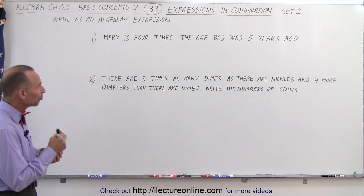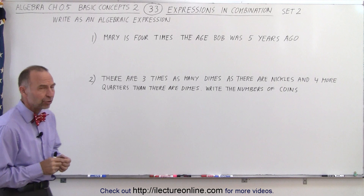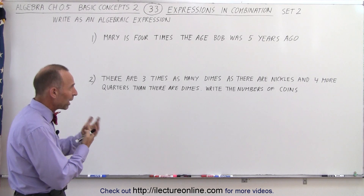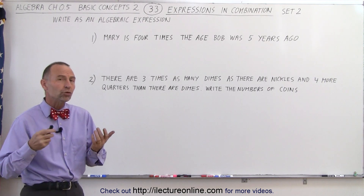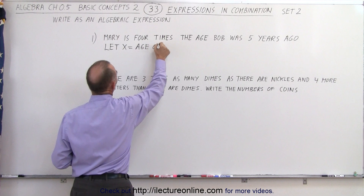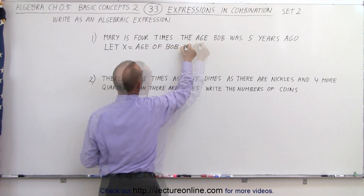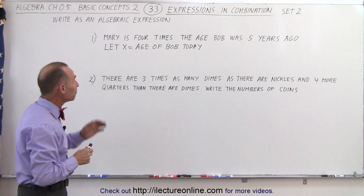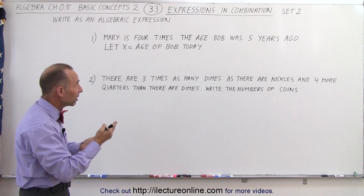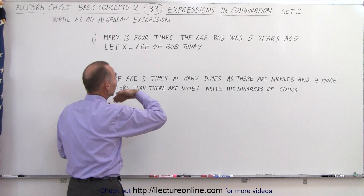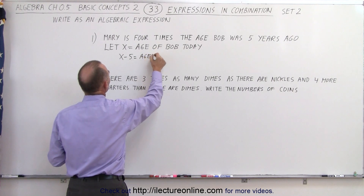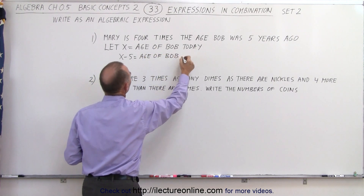The first one says: Mary is four times the age Bob was five years ago. So how do we express the age of Mary? We need to find a way to express the age of Bob today, so let x equal the age of Bob today. Since we're going to compare Mary's age to the age of Bob the way it was five years ago, we have to find a way to express Bob's age five years ago. So we can subtract 5 from x — that gives us x minus 5, which equals the age of Bob five years ago.